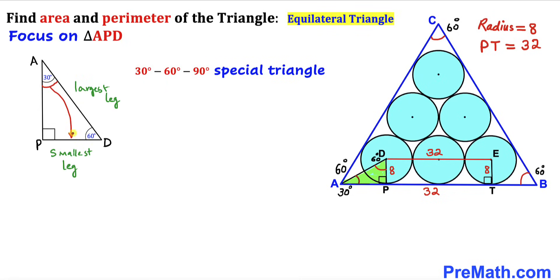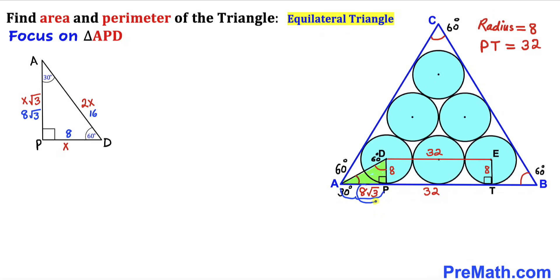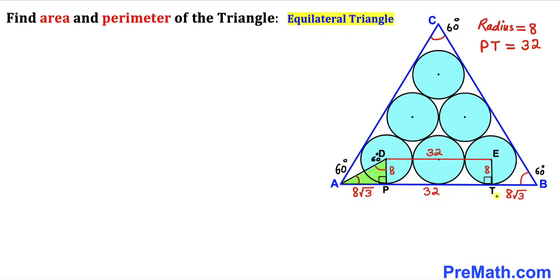In a 30-60-90 triangle, the side opposite the 30-degree angle is the smallest leg, and the largest leg is twice the smallest leg. The third leg is x times √3. In our case the smallest leg is 8, so the largest leg is 16, and side AP = 8√3. By symmetry, the other side BT = 8√3 as well.